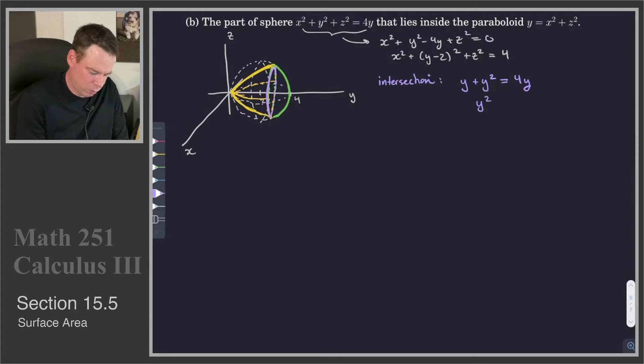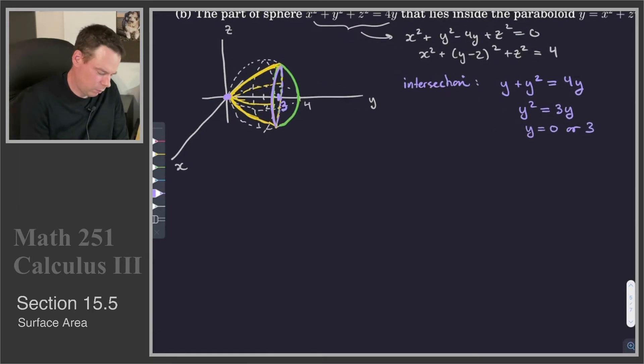In other words, y squared is equal to 3y, or y is equal to 0 or 3. So that says they're going to intersect right here at the origin when y is 0, and they're also going to intersect when y is 3. So that means that that's out here at a value of 3.